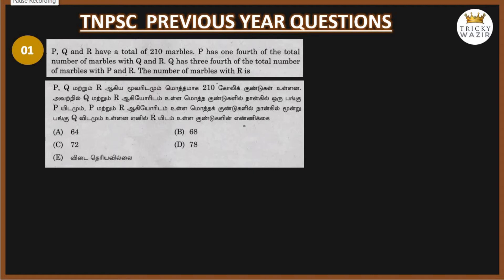Hello guys, welcome to Tricky Vazir. In this video, TNPSC previous year questions. P, Q and R have a total of 210 marbles. P has one-fourth of the total number of marbles with Q and R. Q has three-fourth of the total number of marbles with P and R. The number of marbles with R is what we need to find.